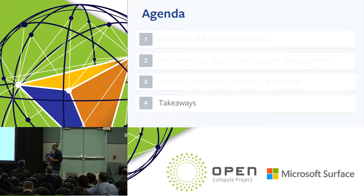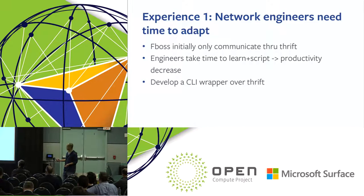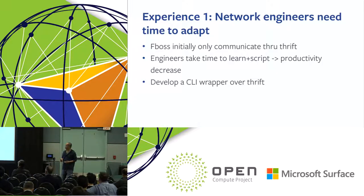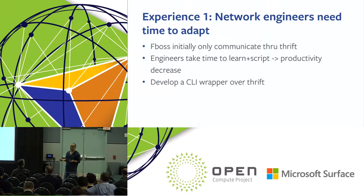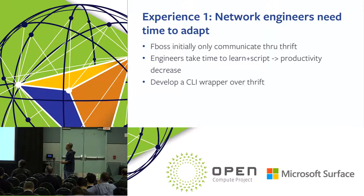During building our network management software, we learned a lot. The first experience is that network engineers actually need time to adapt to any new model. When we introduced FBOS, we thought we would only communicate through Thrift protocol. As a software engineer, Thrift is good because it can communicate with different programming languages, is easy to serialize, and is structured. But we noticed network engineers take time to context-switch when troubleshooting across vendor switches and FBOS, which decreases productivity. To address that, we wrote a CLI wrapper over the Thrift protocol. The lesson learned is that CLI is actually somewhat important, but can be fragile since different vendors require different commands for the same information.